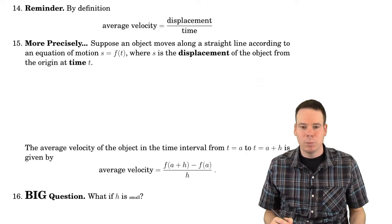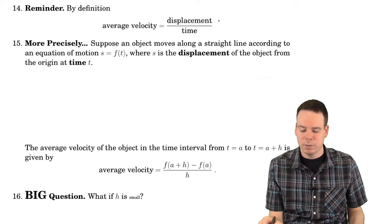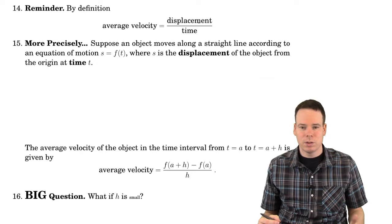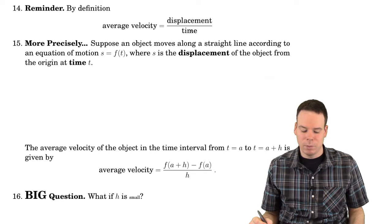Let's now revisit the velocity problem. Recall that the average velocity of a moving particle is its displacement divided by its time. Displacement, the difference between where it started and where it ended on the time interval, divided by the length of that time interval.